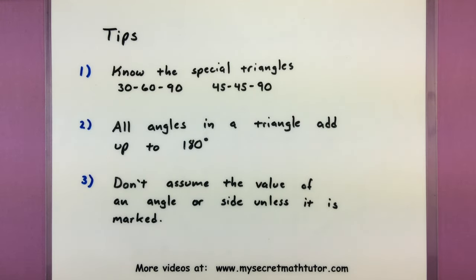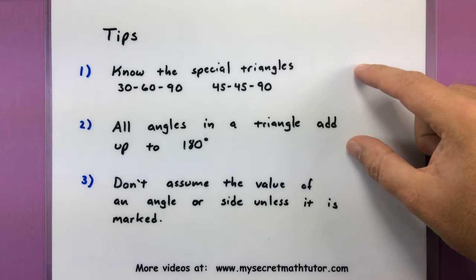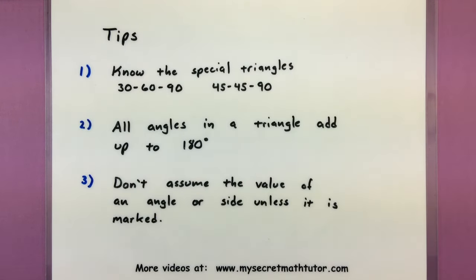And of course a really big one is you should never assume the value of an angle or side unless it is clearly marked. Sometimes in these figures or drawings it can look like you have a right angle or it could look like with your protractor that maybe something is 45 degrees, but unless it's marked that way, try not to assume that actually is one of those angles. Chances are you might be able to find out if it really is a key value, but you'll have to use some other information first before you can actually make that leap.